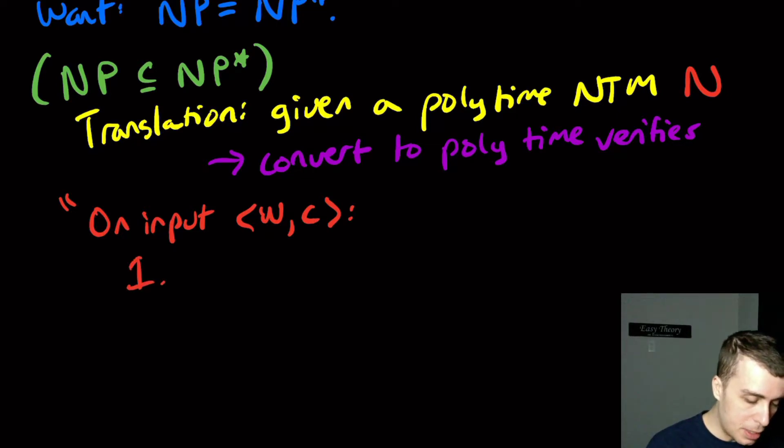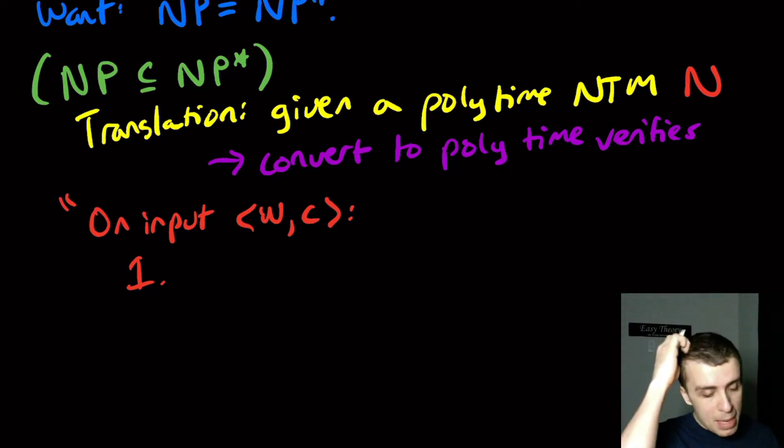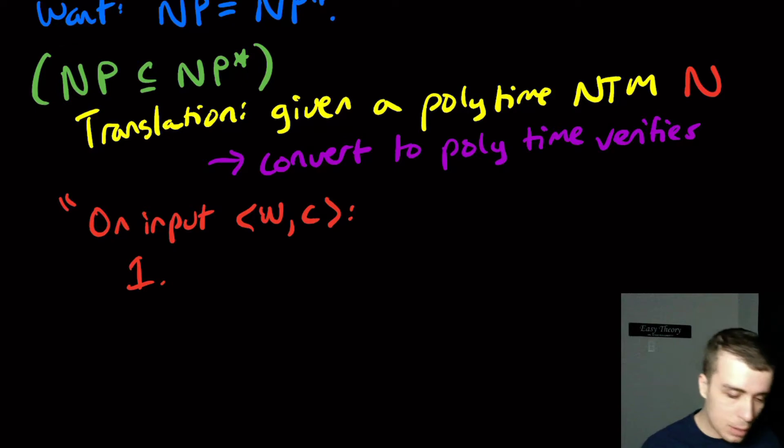So then the first step here is, well, we got to make this machine that we're making right here deterministic. And we're supposing that the certificate's already made because it's being provided as input. So what we can do is let's just go through the certificate character by character and just simulate the non-deterministic machine by using the characters of C as the choices, the non-deterministic choices that are made along the way.